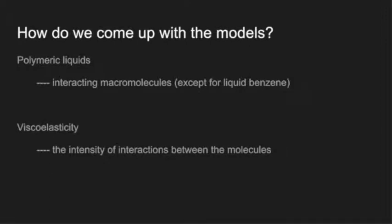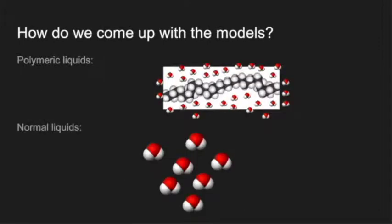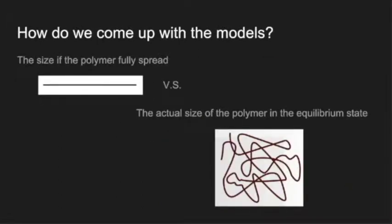So we can treat polymeric liquids as interacting macromolecules, and the main cause of the viscoelasticity as the intensity of interactions between them. Because of this macromolecular behavior of polymers, the effects of interactions can be added up independently unlike normal liquids, because each normal liquid molecule has much less neighbors than polymers. Here we can see that polymers have lots of neighbors while normal liquids only have a few. Hence, for polymeric liquids, we can learn the mean property of the whole system only by studying individual molecules' properties. Viscoelasticity can be evaluated by figuring out the difference between the fully spread size of the polymer and the actual size of it in solution. Hence, figuring out the relationship between these two sizes is the main point of our models.